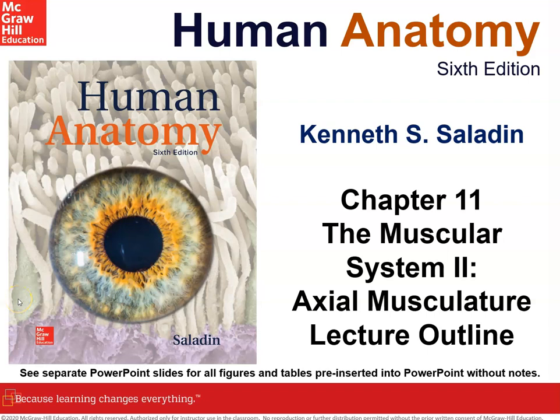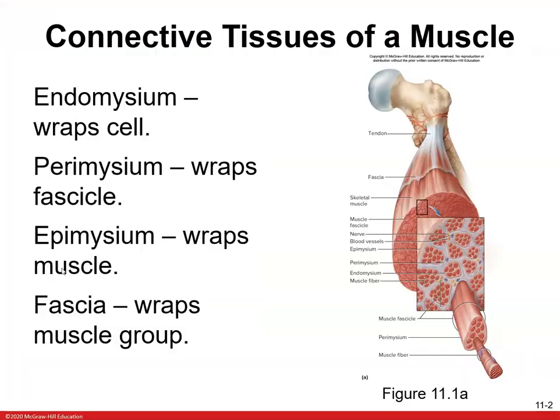Let's start Chapter 11. So, connected tissues of a muscle. If you look at the muscle — we went over this a little bit in class before the break, but a little bit of review. There are a couple layers of the muscle. You have the endomysium, which wraps the cell. You have the perimysium, which wraps the fascicle. You have the epimysium, which wraps the entire muscle. And then you have fascia that wraps the muscle group.